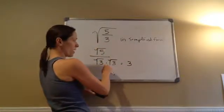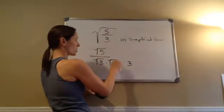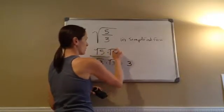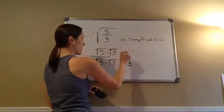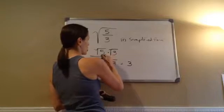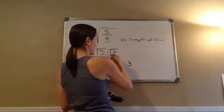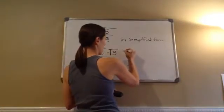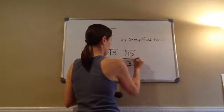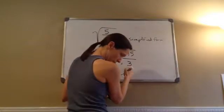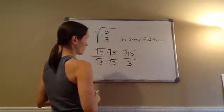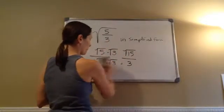What you do to the bottom, you have to do to the top. So that becomes square root of 5 times the square root of 3, which is the square root of 15 over 3. And that's the final answer on that one.